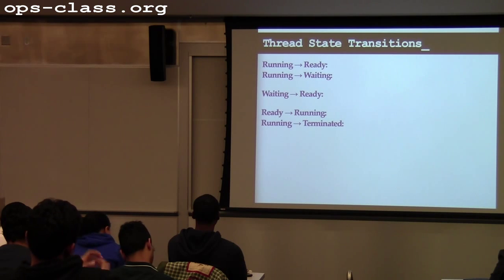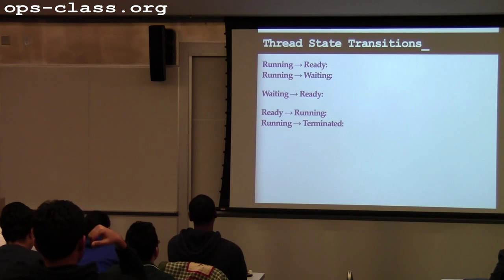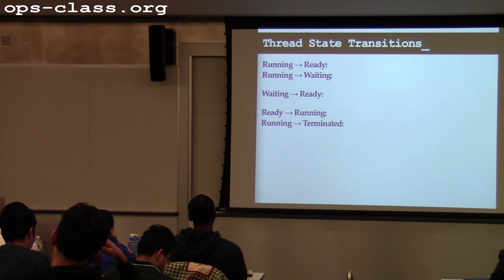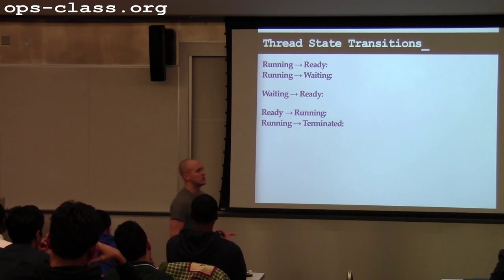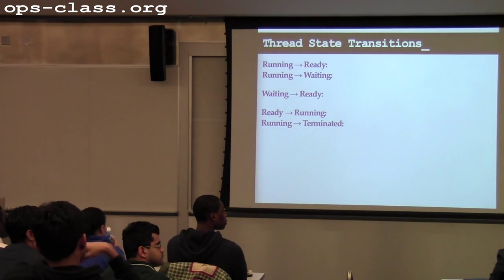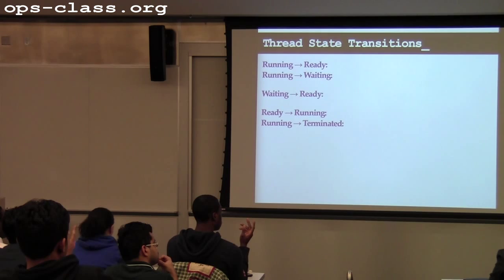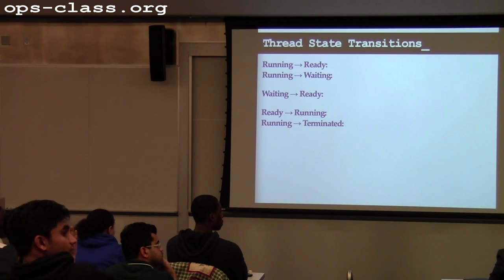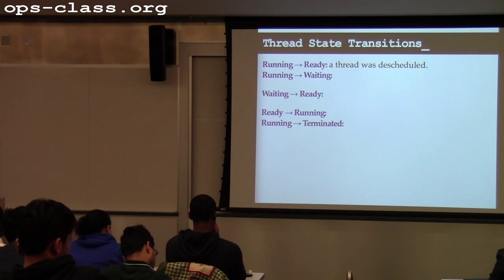Let's talk about the valid thread state transitions. When a thread goes from running to ready, the operating system has moved it into the ready state — we call that being descheduled. The thread was running, and the OS said your time is up, I'm going to run something else. What about moving from running to the waiting state? Something happened — often a blocking system call — that caused the thread to have to wait for something else, so it's moved into the blocked state.